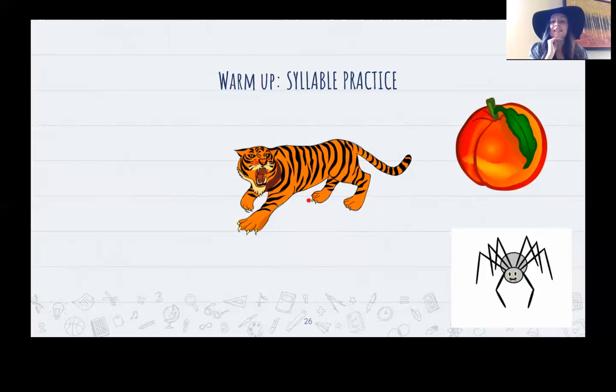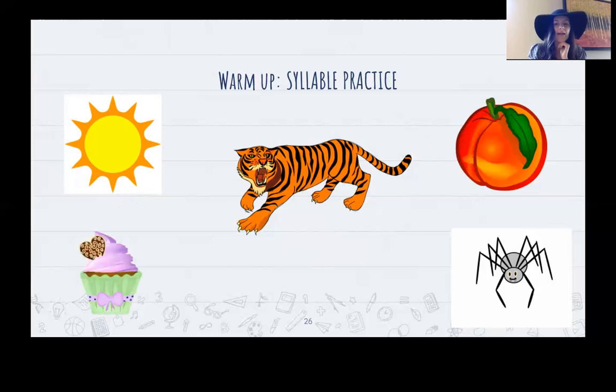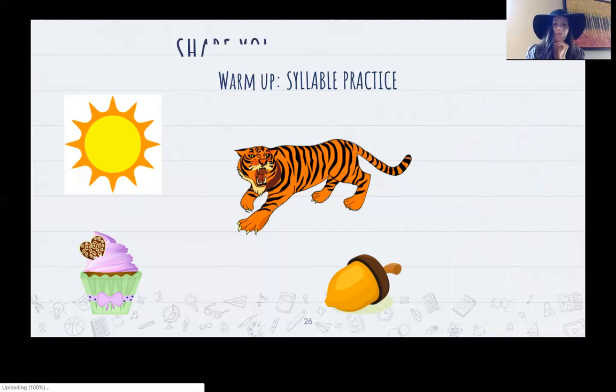And last one. At least this is a tiger. Say it for me. How many syllables are in tiger? Nice job. If you said two, you are correct. Sun. How many syllables are in sun? One. Nice job. Cupcake. How many syllables do you hear in cupcake? Acorn. Two. Nice job.